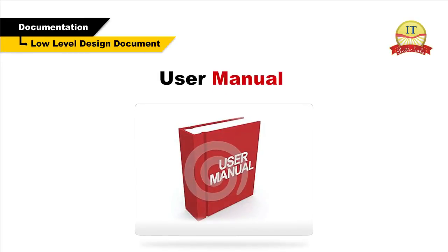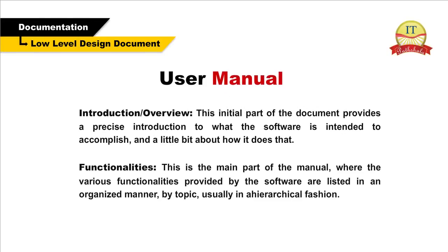User manual. The user manual is an essential document of the software engineering development process. This document describes how the end user will be able to use and interact with the software product being developed. A good user manual usually contains most or all of the following items. Introduction or overview — this initial part of the document provides a precise introduction to what the software is intended to accomplish and a little bit about how it does that. Functionalities — this is the main part of the manual where the various functionalities provided by the software are listed in an organized manner by topic, usually in a hierarchical fashion.